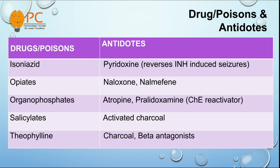For organophosphate poisoning, which is basically anticholinesterase inhibitors, we can use atropine or pralidoxime as antidote. Pralidoxime is basically a cholinesterase reactivator. And for salicylate poisoning, we can use activated charcoal.